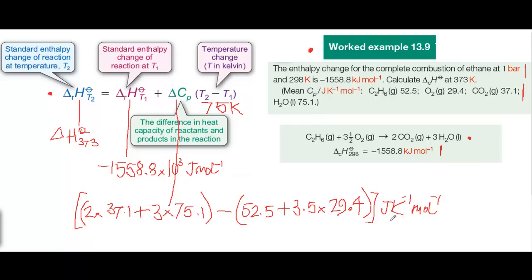And that value for Cp comes to 144.1 joules per Kelvin per mole. So now we've assembled all the data, and all you need to do is to put it into the Kirchhoff equation, and provided you get the arithmetic right, we're home and dry.